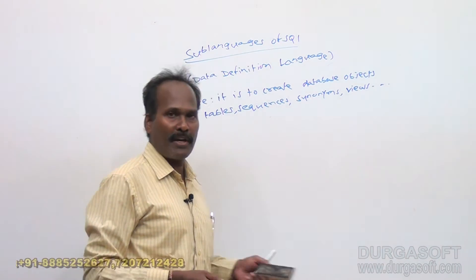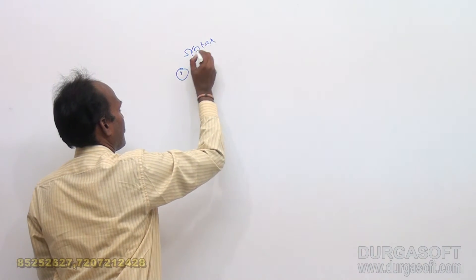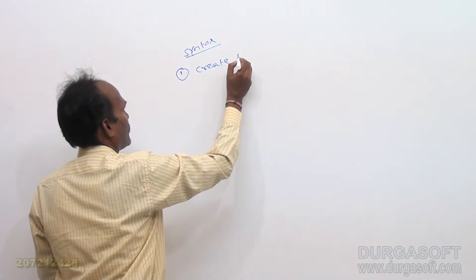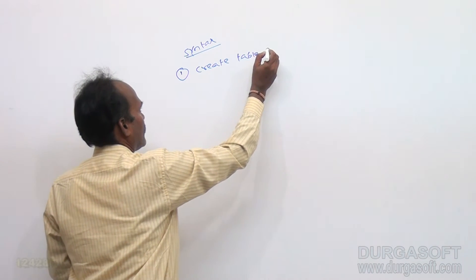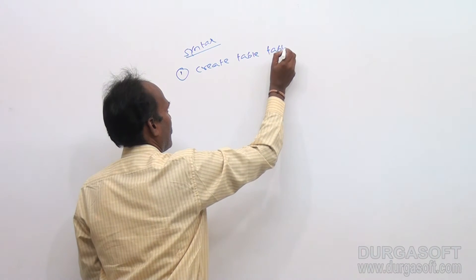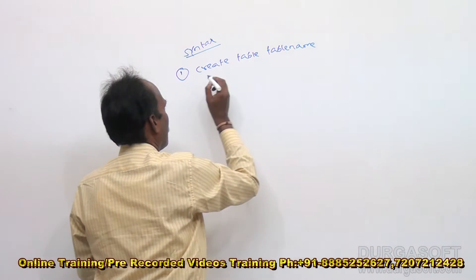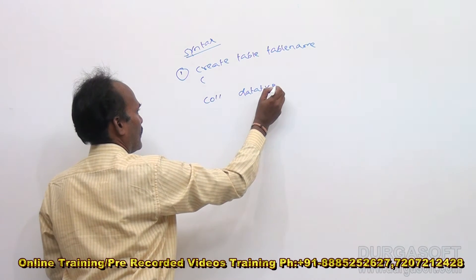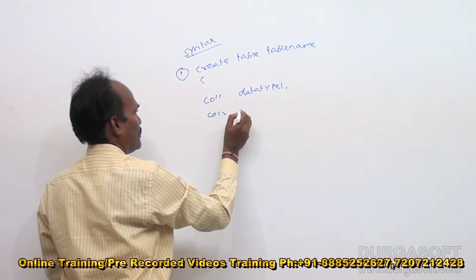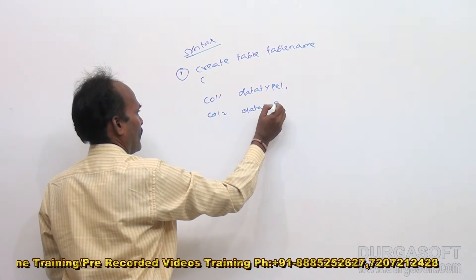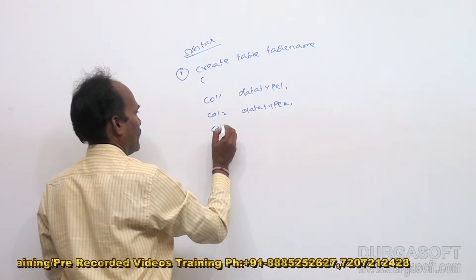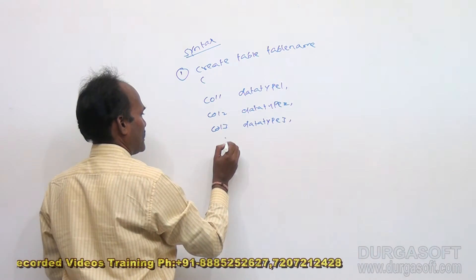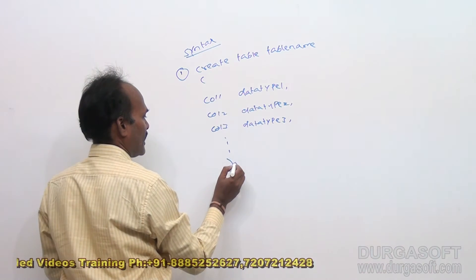Just we will discuss how create command table will be of create command. How it is like create table, table name, column 1, data type 1, next column 2, data type 2, column 3, data type 3. Like this you can give any number of columns.